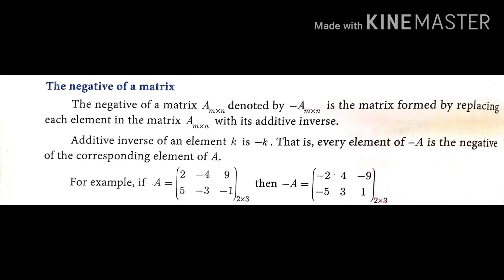The last type is the negative of a matrix. The negative of matrix A, denoted by -A, is formed by replacing each element with its negation: plus becomes minus, and minus becomes plus. This is the additive inverse — every element of -A is the negative of the corresponding element of A.